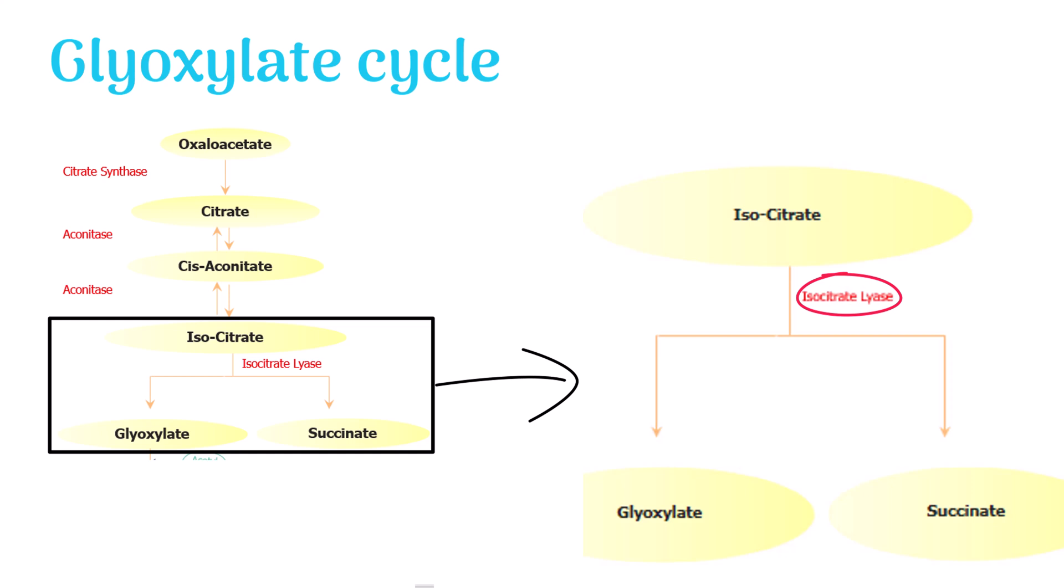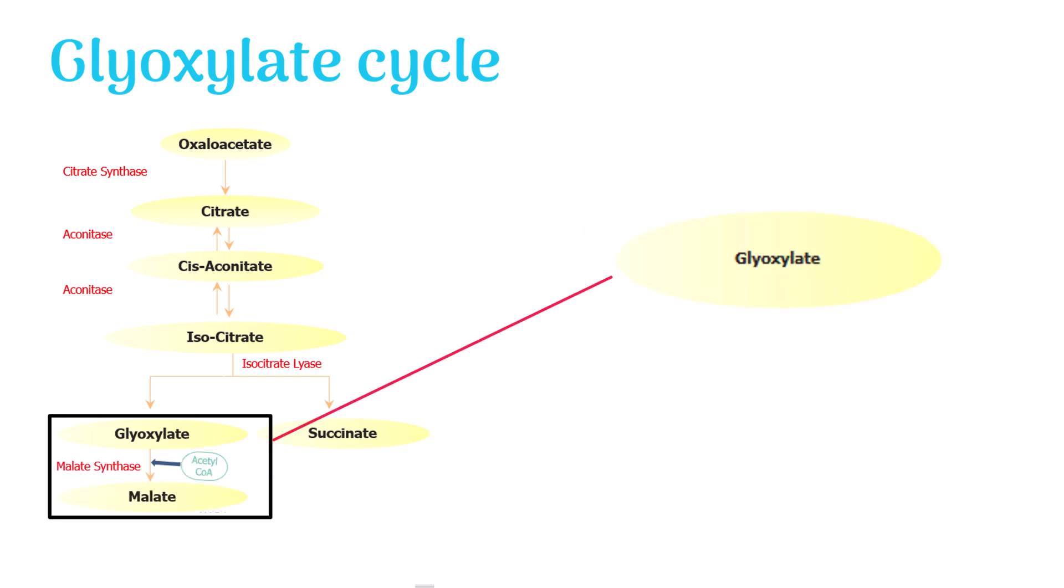Let's jump to the next reaction. In this reaction, glyoxylate forms malate. Remember, acetyl-CoA is added in this reaction. This means glyoxylate joins with acetyl-CoA and forms malate. The enzyme in action is malate synthase.